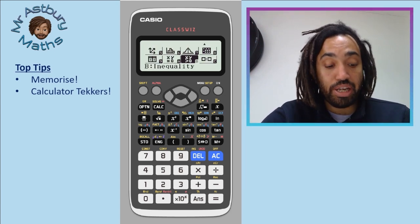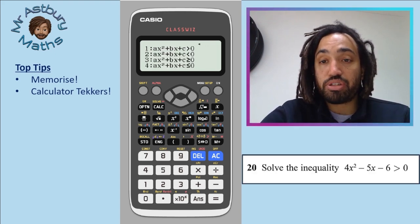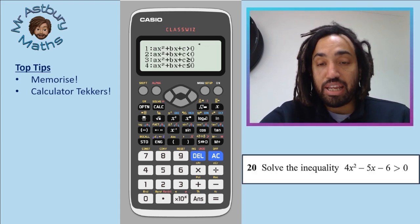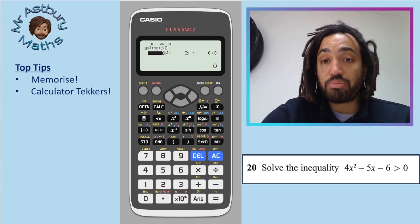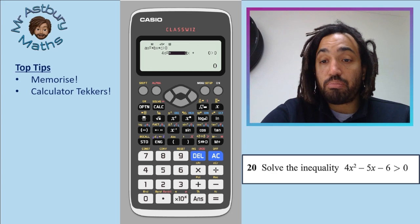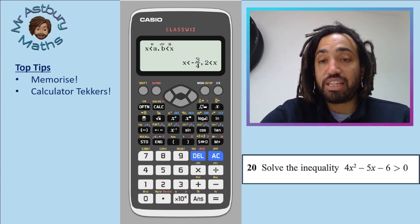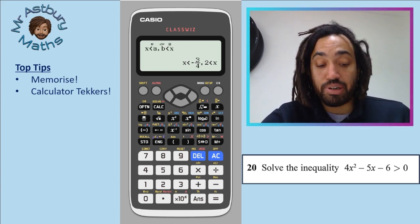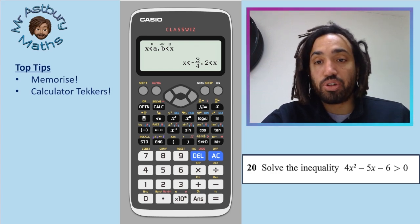And you can go across here to inequality. Let's say you get this question here, you want a degree two because it's a quadratic. And here it's greater than zero. So that's option one. And you could type in your numbers again. So you have four minus five minus six. And it gives you the answers there. Again, you need to show algebra working, but this is a great way of checking to make sure that you've got your answer right.